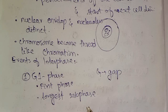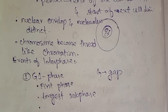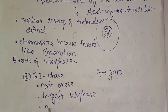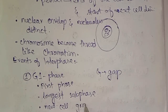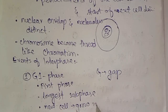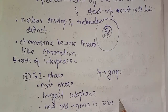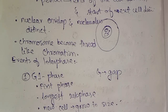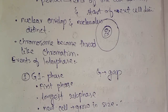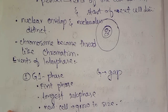In the G1 phase, newly produced cells grow in size and undergo internal chemical changes which prepare the daughter cell for DNA replication.